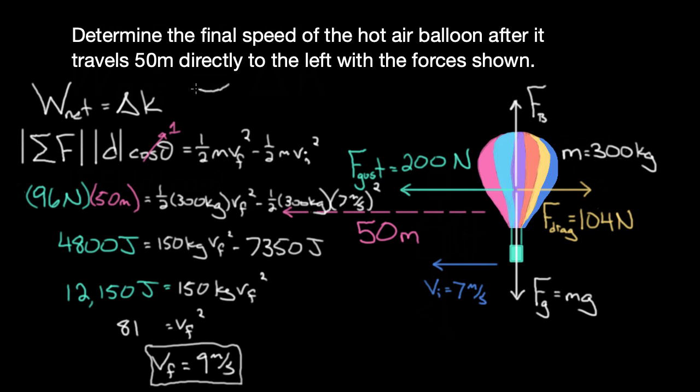To recap, the work-energy principle states that net work equals the change in kinetic energy. This can help you conceptually or qualitatively determine whether something will speed up, slow down, or change direction. Quantitatively, you can use this to solve for the change in kinetic energy as well as the final or initial speed.